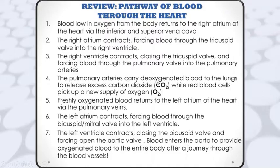The pulmonary arteries carry deoxygenated blood to the lungs to release excess carbon dioxide while red blood cells pick up a new supply of oxygen. The freshly oxygenated blood returns to the left atrium through the pulmonary veins. The left atrium contracts, forcing blood through the bicuspid or mitral valve into the left ventricle. The left ventricle contracts, closing the bicuspid valve and opening the aortic valve, so blood enters the aorta to provide oxygenated blood to the entire body.